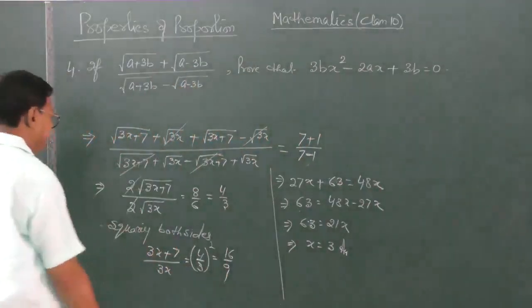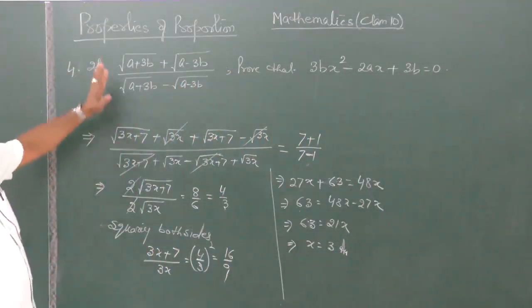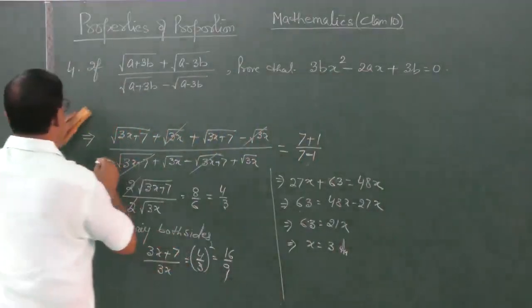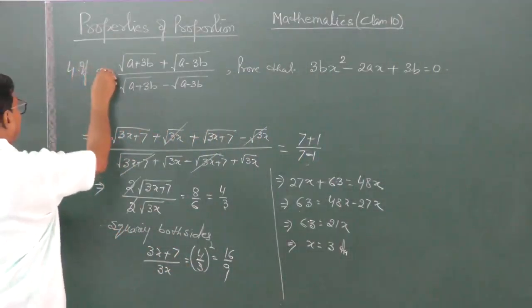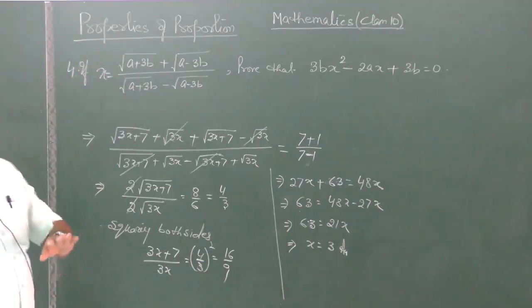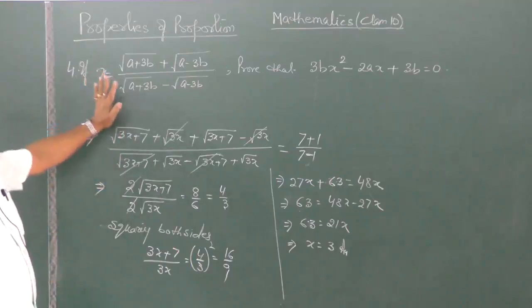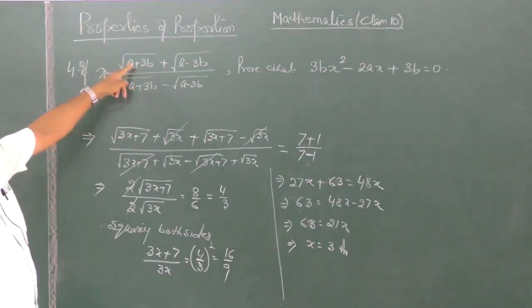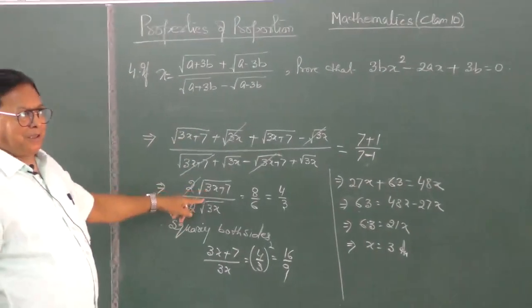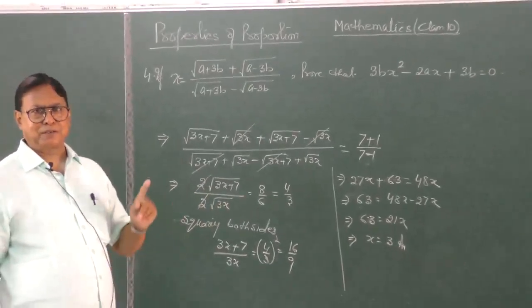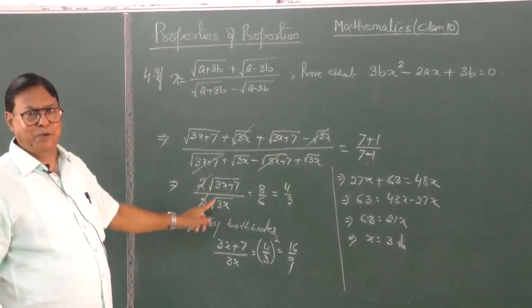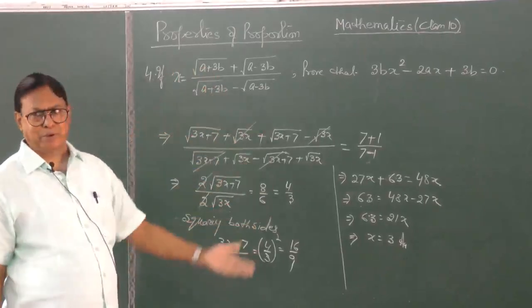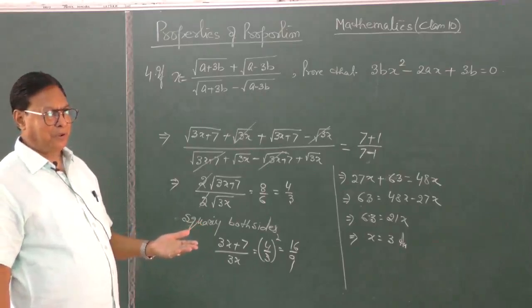There is another type proving. Now before I proceed, this x is equal to something has to be there. If x is equal to this, now you will apply componendo dividendo. Now look at this, you will get this plus this, so twice root a plus 3b by twice root a minus 3b.